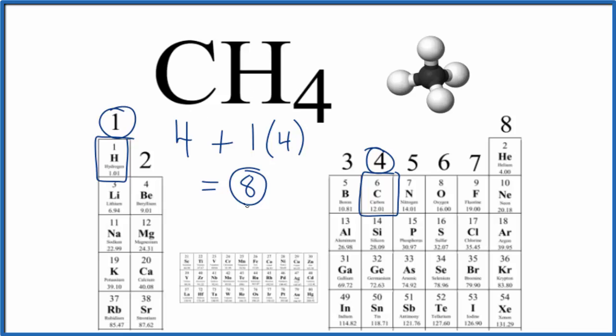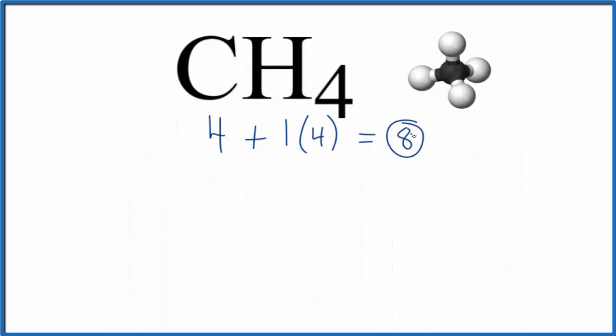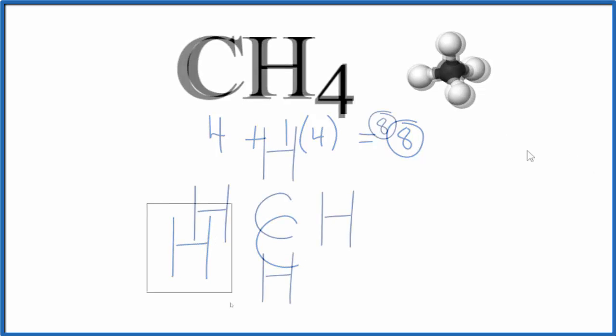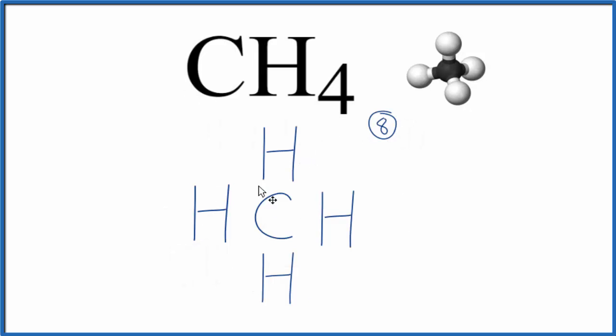Let's quickly draw the Lewis structure. So we have eight total valence electrons for CH4. We put carbon in the center, and that's because hydrogen always goes on the outside. We have four hydrogen atoms. So we have our four hydrogen atoms around that central carbon. Remember hydrogen always goes on the outside.